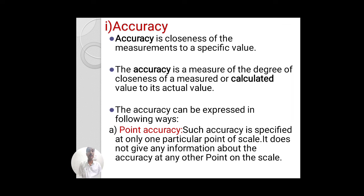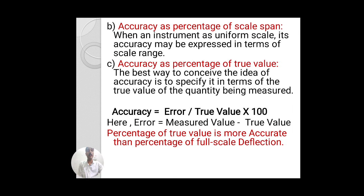Accuracy is the closeness of the measurement to the specific standard or true value. It is the degree of closeness of a measured or calculated value to its actual, standard, or true value. Accuracy can be expressed in different ways. The first is point accuracy — such accuracy is specified only at one particular point of scale and does not give any information about the accuracy at any other point of the scale. The second is accuracy as a percentage of scale span.